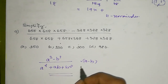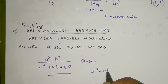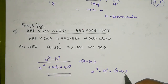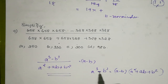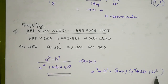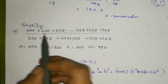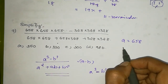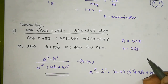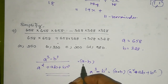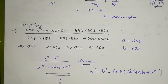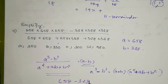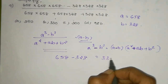We can compare this with the equation: a³ minus b³ equals a minus b into a² plus ab plus b². Here a is equal to 658 and b is equal to 328. So the answer is equal to a minus b, which is 658 minus 328, and this gives 330 as the answer.